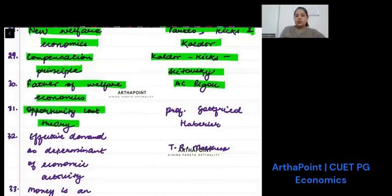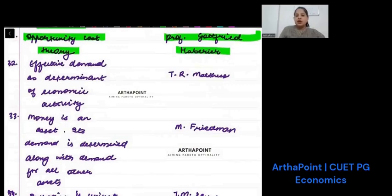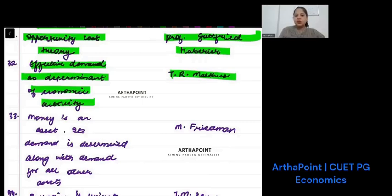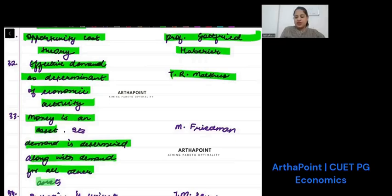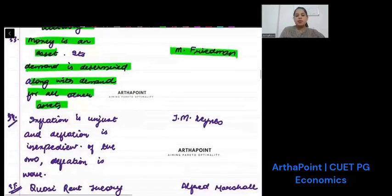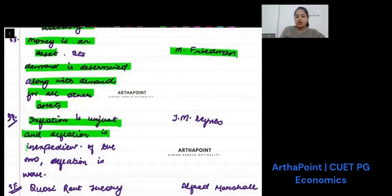Opportunity cost theory is given by Professor Gottfried Haberler. Effective demand as a determinant of economic activity is given by T.R. Malthus. Who stated money is an asset, its demand is determined along with demand of other assets? Friedman. Inflation is unjust and deflation is inexpedient; of the two, deflation is worse. Who stated this? J.M. Keynes.